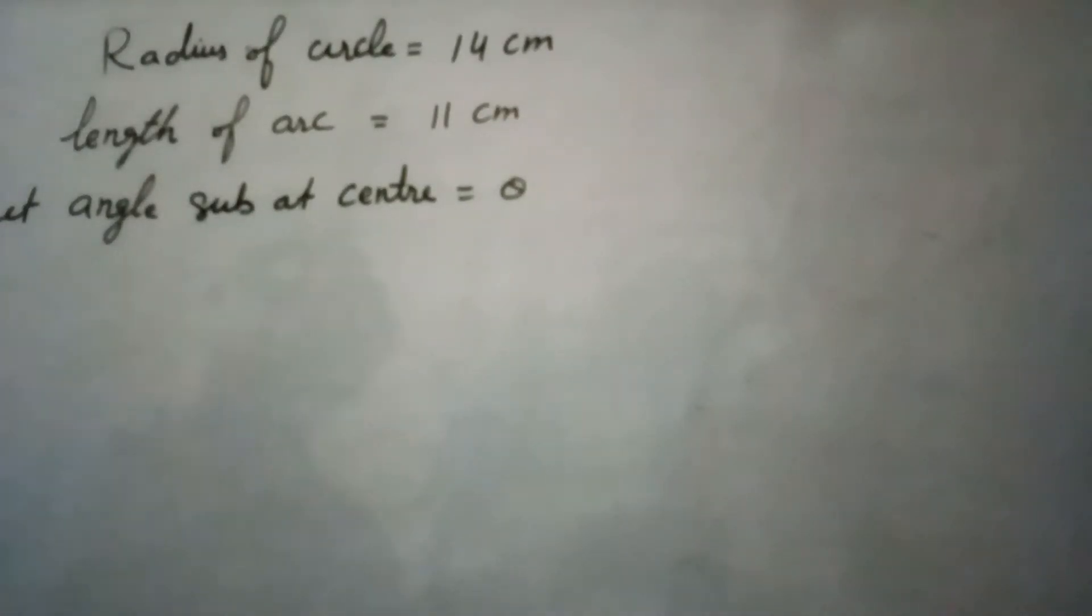In this question, it is given that a circle of radius 14 centimeters has an arc with length 11 centimeters. We have to find the angle subtended by this arc at the center of the circle.